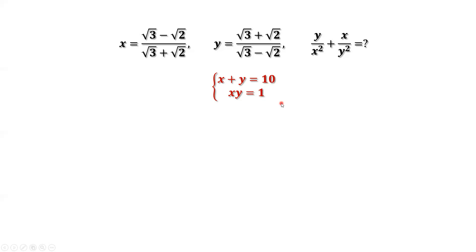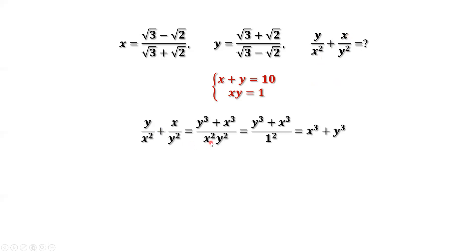Next, we want to simplify our expression: y over x squared plus x over y squared. Considering the common denominator for the sum, which is x squared times y squared, the numerator becomes y to the power of 3 plus x to the power of 3. Because x times y equals 1, the denominator becomes 1. So the original question reduces to x to the power of 3 plus y to the power of 3. We need to find the value for this.